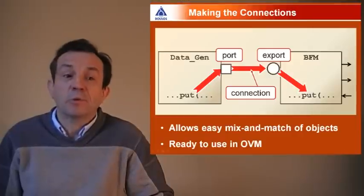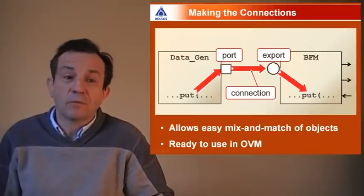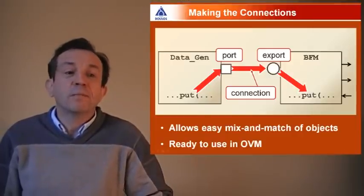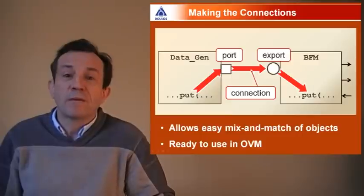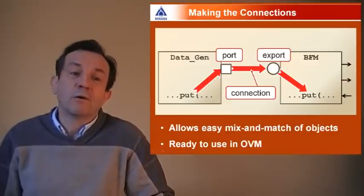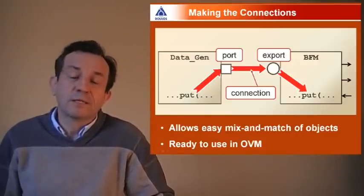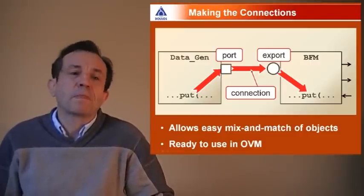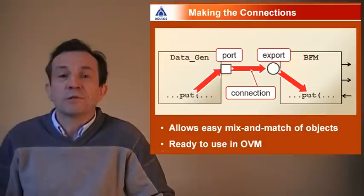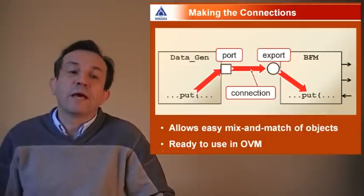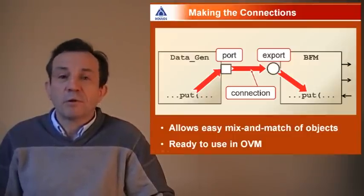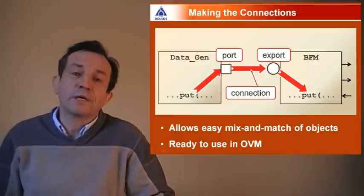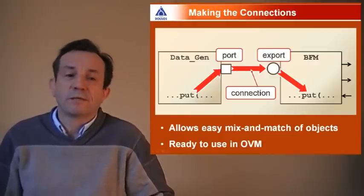The data generator has a port that allows it to assume that somebody else has provided the put method that it needs to call. Over on the right-hand side, the bus functional model has that put method. It actually provides the real implementation of the method, but of course it then has to give away that method to other objects in the test bench. It does that using the complement of a port known as an export.